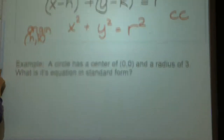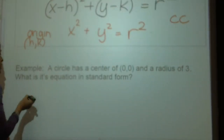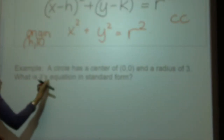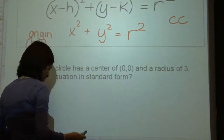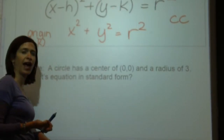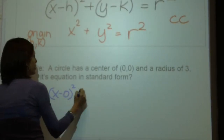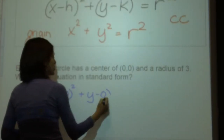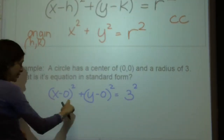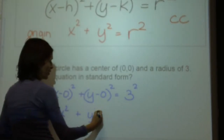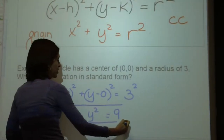Let's write a real easy one. A circle has a center of (0, 0) — the origin — and a radius of 3. What's its equation in standard form? We go right to the equation: x minus 0 squared plus y minus 0 squared equals my radius squared. Simplified, that's x squared plus y squared equals 9. And there is the equation of a circle.